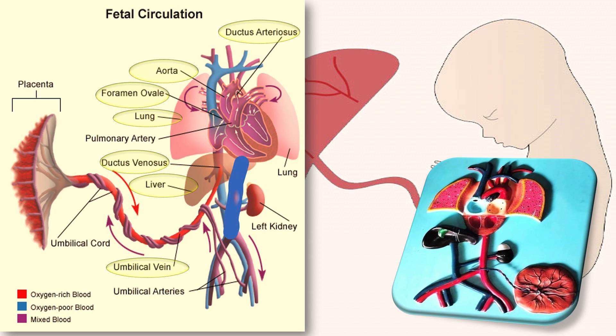The deoxygenated blood then passes down the aorta to enter the umbilical arterial circulation and return to the placenta for reoxygenation.